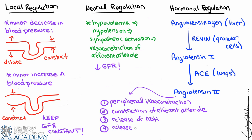Effect three is release of antidiuretic hormone (ADH), which is responsible for water reabsorption — if blood pressure or blood volume is low, increasing water reabsorption in the kidneys can improve both. Effect four is release of aldosterone, which increases sodium reabsorption. Since water follows solute, sodium reabsorption leads to water reabsorption, further improving and maintaining blood pressure and blood volume.